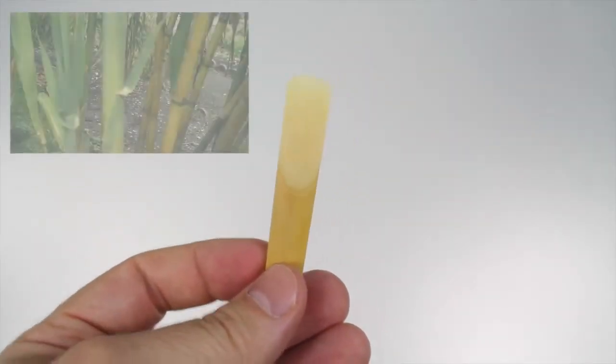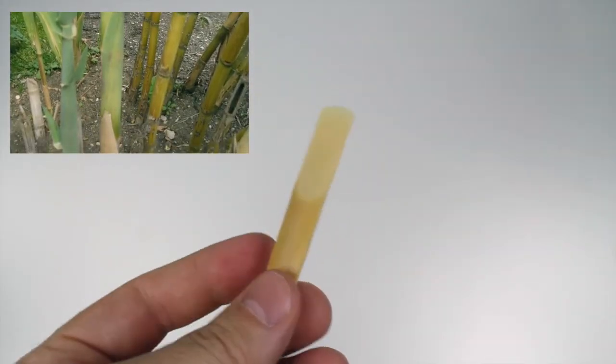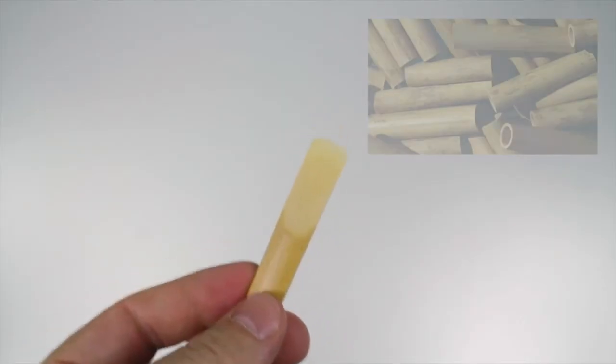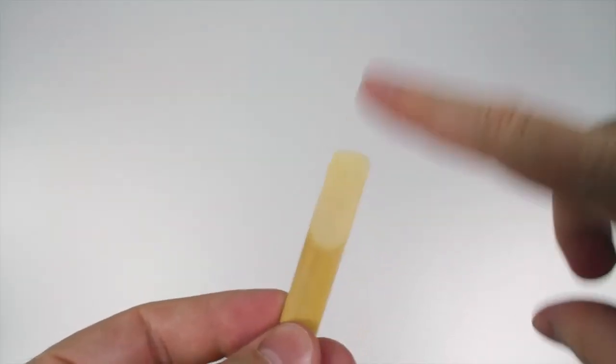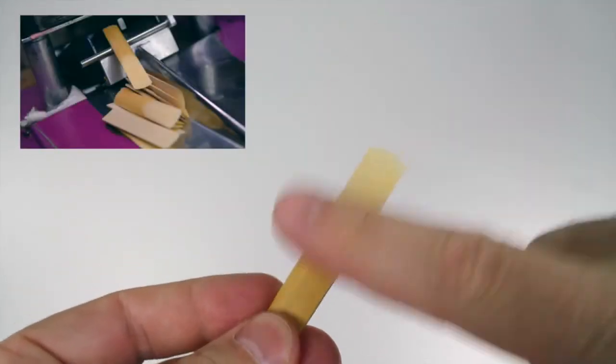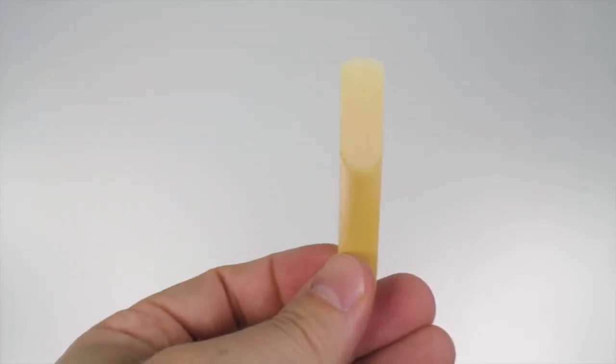Reeds are made from a tall wood-like plant called cane. It's kind of like bamboo. At a factory, they take the cane, they cut it down into small pieces, and then they shave off part of the bark very thin, and it turns it into a reed that we can use for an instrument.